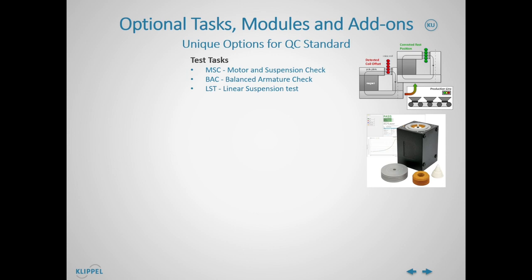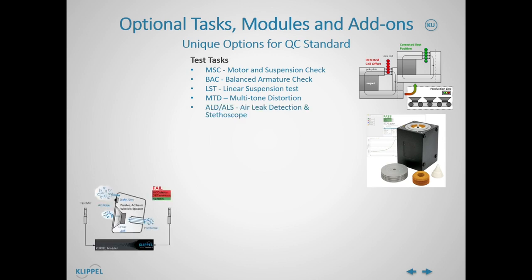The BAC, Balanced Armature Check, uses the same principle but is dedicated to balanced armature transducers. The LST, the Linear Suspension Check, is dedicated to the compliance check of suspension parts and passive radiators. The MTD, Multi-Tone Distortion, uses multi-tone signals to measure fundamental and multi-tone distortion. The ALD and ALS — Air Leak Detection and Stethoscope — detect air leaks in transducers and audio systems. The EXD, External Devices, is dedicated to the integration and control of external lab and test equipment such as GPIB and Bluetooth radio. Equalization and alignment is used for automatic or assisted adjustment of user-defined level or frequency response.